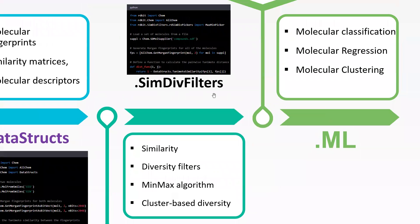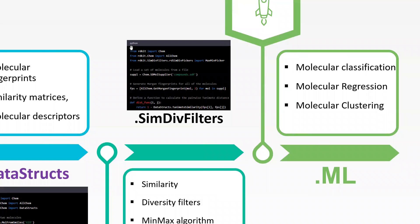The next package is SimDiv filters, which is a very interesting package, especially when handling datasets where you want to calculate diverse similarity and diversity across chemical space. This library provides different algorithms for selecting diverse subsets of larger datasets and visualizing and analyzing diverse compound datasets. MinMax is one of the well-known algorithms here, and cluster-based diversity can also be performed. To use it, call from rdkit import SimDivFilters and SimDivPickers with MaxMinPicker.